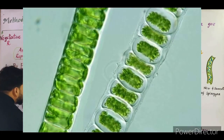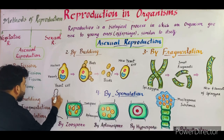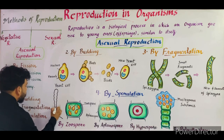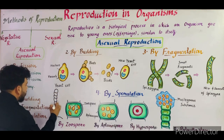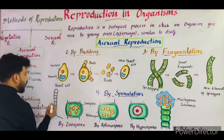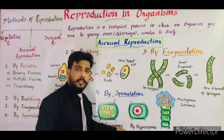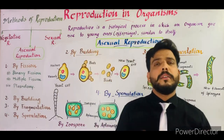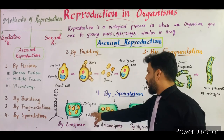Ulothrix is attached to a substratum or base. It has unbranched, straight filaments — these are the cells of Ulothrix stacked one on another, each with a nucleus. This alga reproduces by sporulation, which means formation of spores.